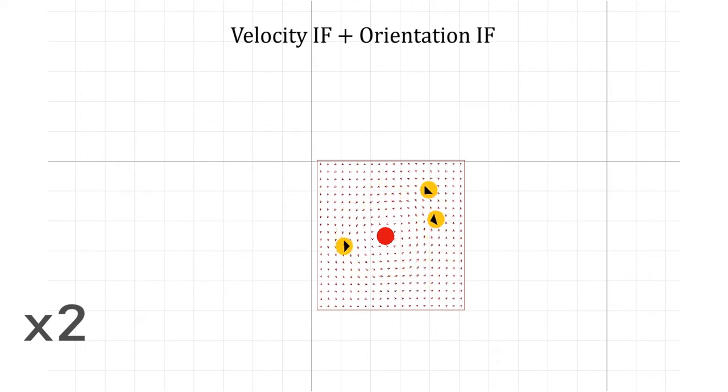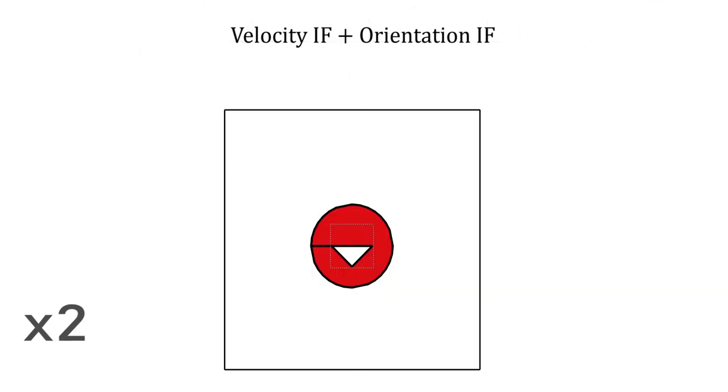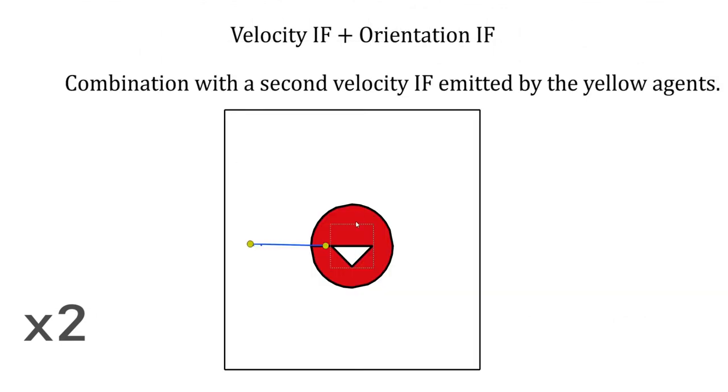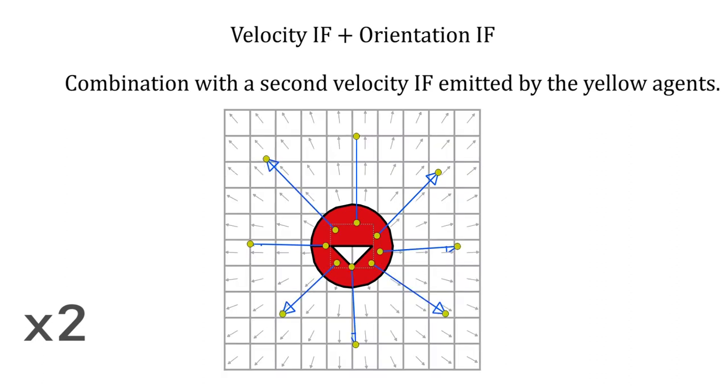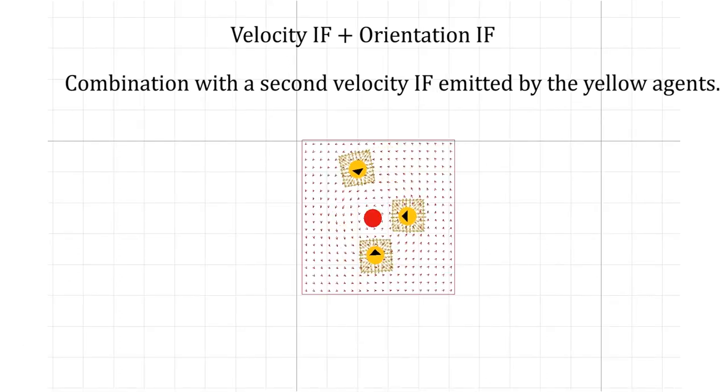The interaction field in question is a function that prescribes velocity orientation vectors in a domain around a source object. Using our approach, it is theoretically possible to combine an unlimited number of interaction fields. For instance, when adding this new field repulsing agents from the source to the yellow agents in combination with the previous interaction field examples, each yellow agent will start avoiding each other while revolving around and looking at the red agent.